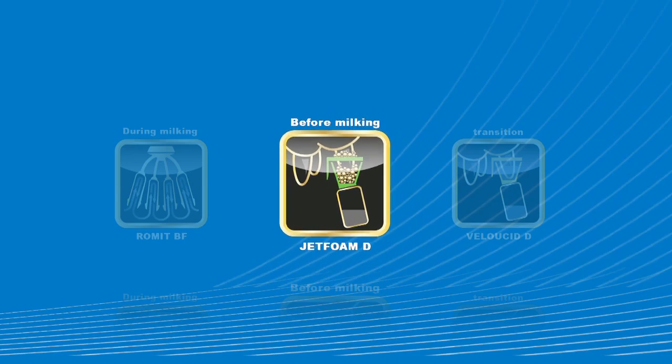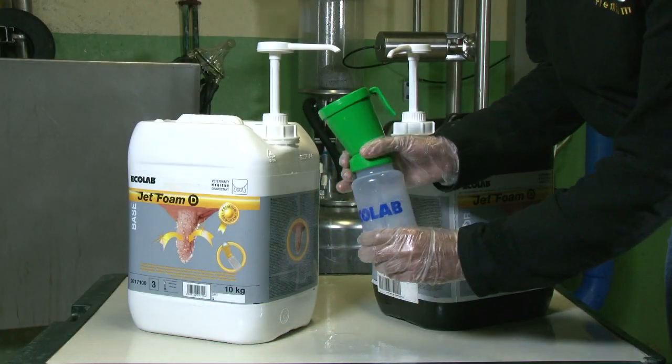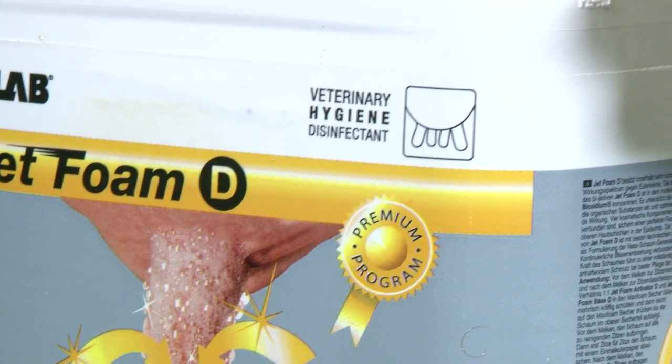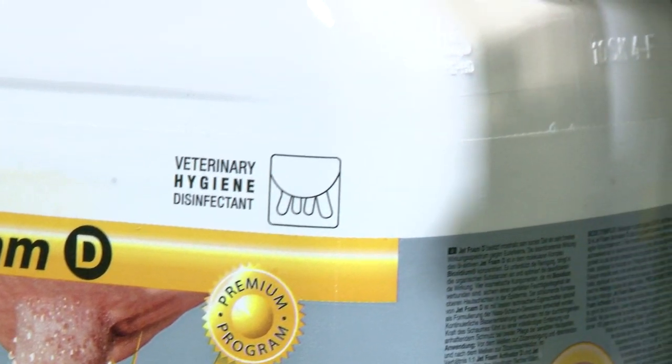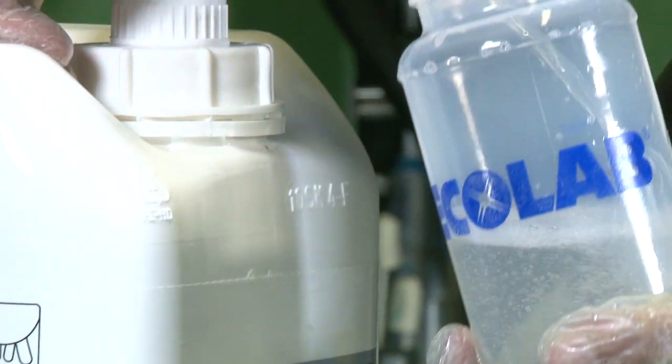Jet Foam is one of our premium range products used for pre-milking hygiene. It is designed to clean and disinfect the teats before milking.